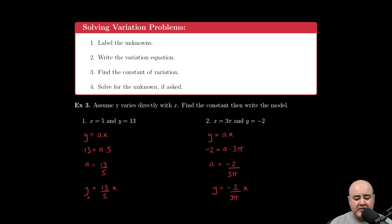The model is the direct variation equation with the constant plugged in. So we know that y equals 13 over 5 times x. At this stage, this question is considered complete because we're not being asked to solve for some unknown quantity.